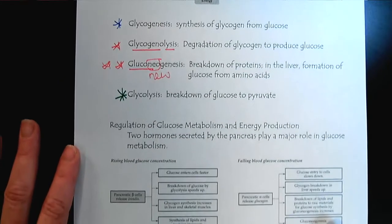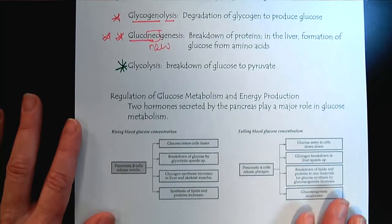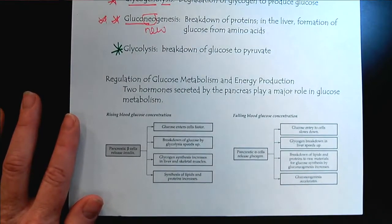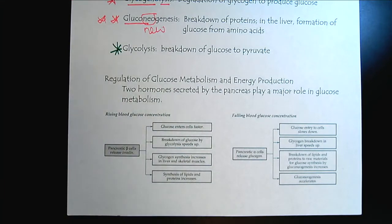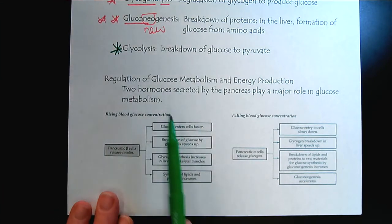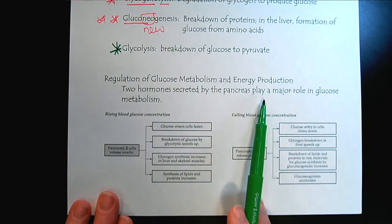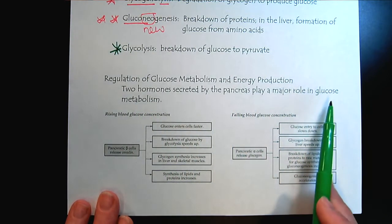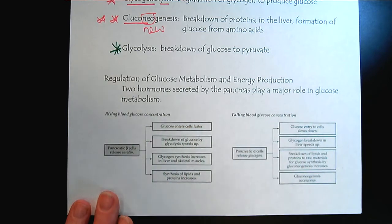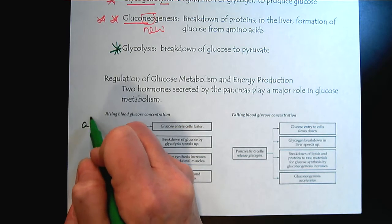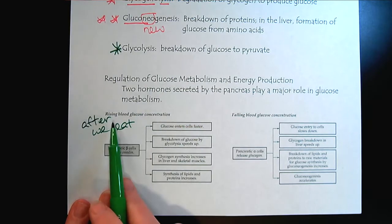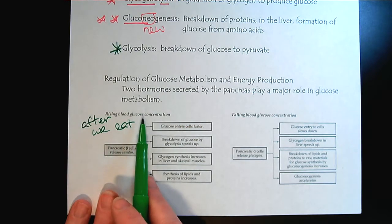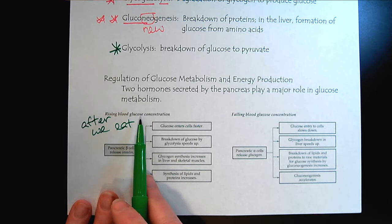Now let's look briefly at the regulation of glucose with energy metabolism. There are two main hormones secreted by the pancreas that play a major role in glucose metabolism. After we've eaten, we're going to have a rise in blood glucose because we're breaking down the foods in our body to get glucose.